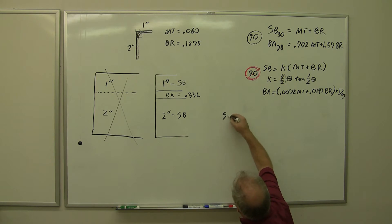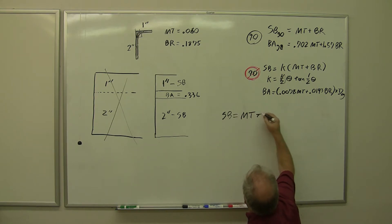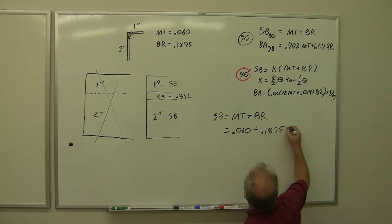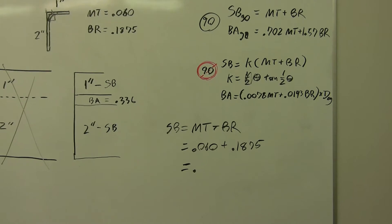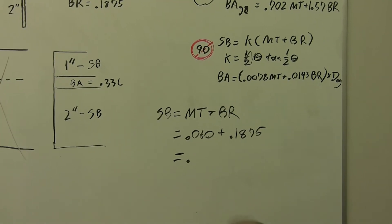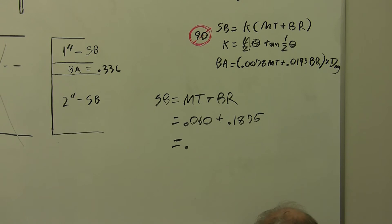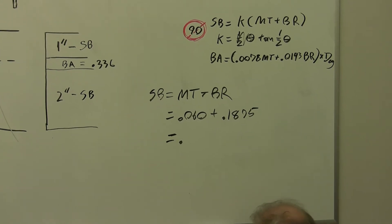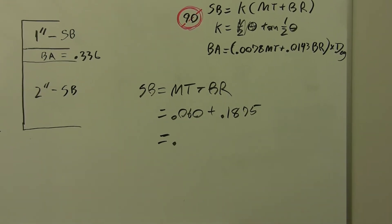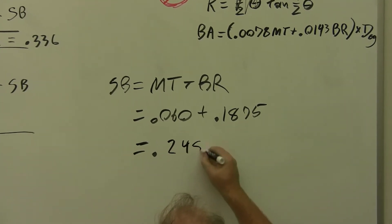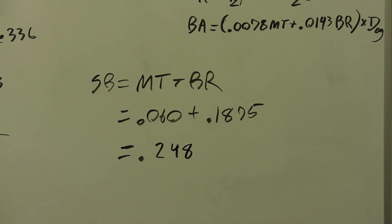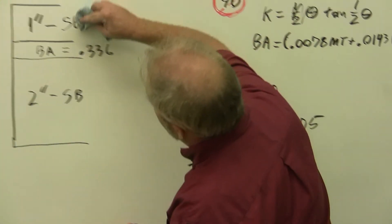Setback equals material thickness plus bend radius equals 0.060 plus 0.1875 equals... I should have remembered this before I erased. 0.06 plus 0.1875 gives us 0.247, or 0.248 rounding to 0.248. So we're going to come over here and substitute 0.248 in place of our setback.